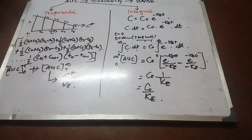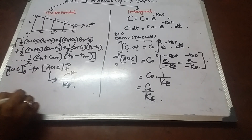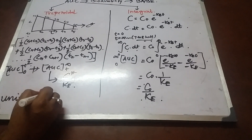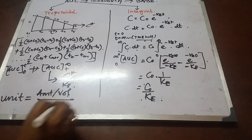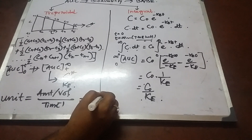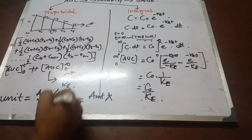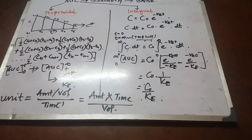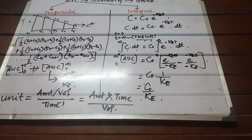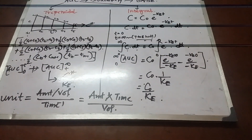The unit of AUC is a very important factor. Concentration divided by ke — concentration means amount per volume, and ke is time inverse — so this can be written as amount multiplied by time, divided by volume. That is the unit for AUC. I hope you understood the calculations properly. This is a very important part of the syllabus of biopharmaceutics and pharmacokinetics. Thank you.